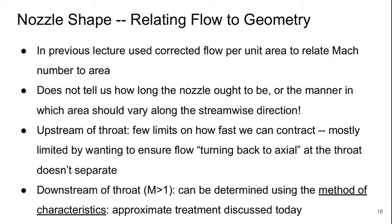So we need to think about the answer here separately for the subsonic flow and the supersonic flow. Upstream of the throat where the flow is subsonic, there's really very few limits on how fast we can contract down that flow towards the throat. Mostly, we're limited by wanting to ensure that as the flow turns back to axial at the throat itself, there's not local separations which would cause a reduction of the effective throat area and therefore restrict the amount of flow.